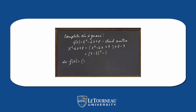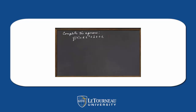We have now completed the square, so our function is in standard form, which tells us that the vertex is at (3, -1). So f(x) has a minimum at x = 3. The minimum value is -1.